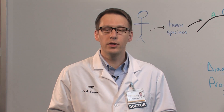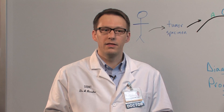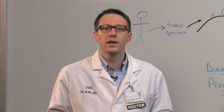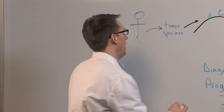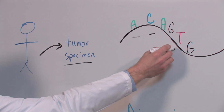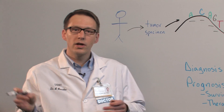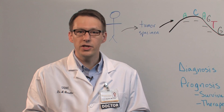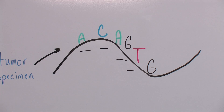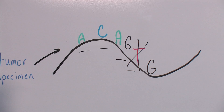Now you may be familiar with genes — that they're encoded by DNA, and that the building blocks of DNA, A, C, T, and G, are all strung together in long strands that constitute our genes. When the normal sequence is disrupted, we refer to this as a mutation.